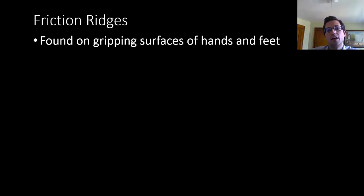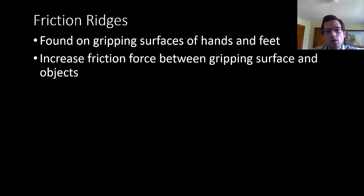These friction ridges are found on gripping surfaces of the hands and the feet. The friction ridges are not only on your fingertips but also on your palms and feet. Their function is to increase the friction force between the gripping surface and objects. These ridges form during fetal development, which means that when a person is born they already have all these friction ridge patterns set, and these patterns do not change over the course of a person's life.